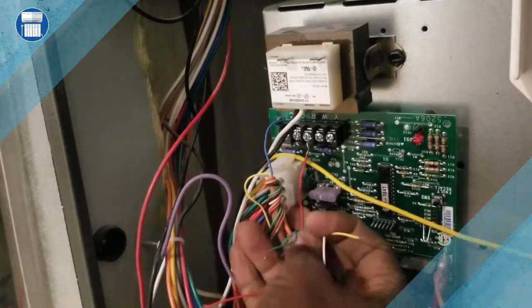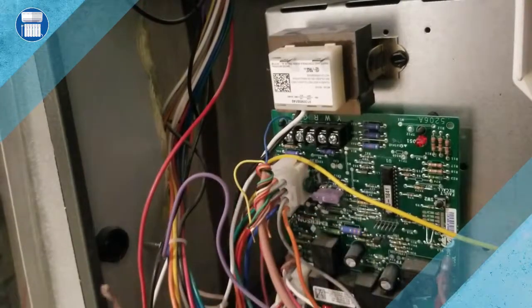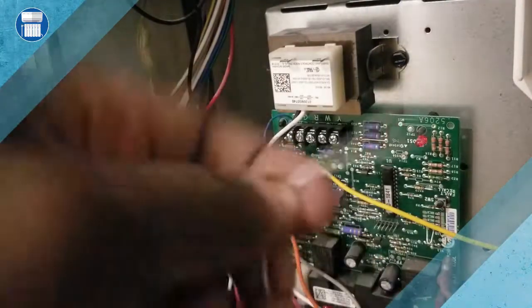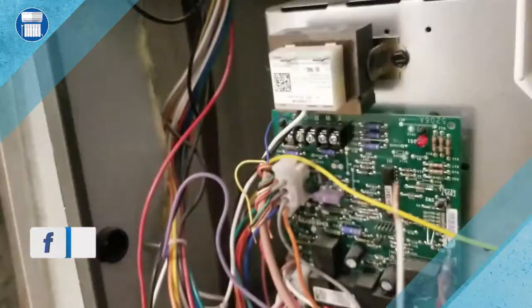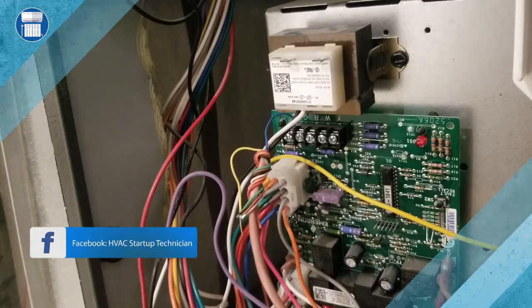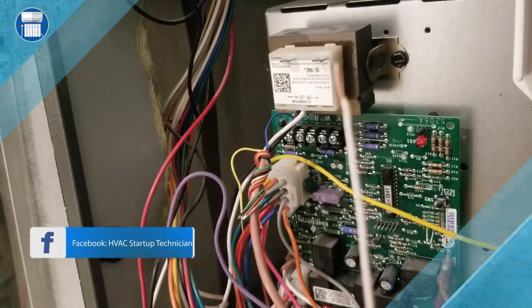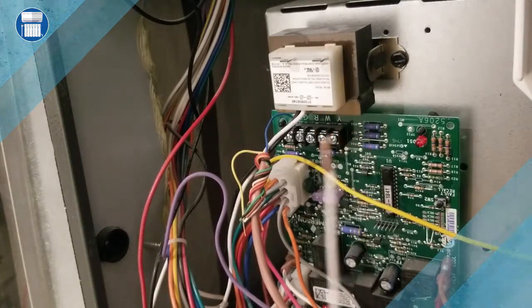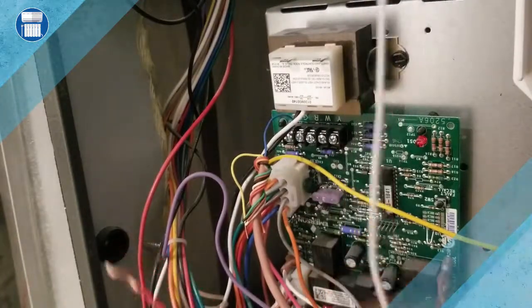We're going to put that to your R terminal right here. Then we're going to white, which is for heat. If you have to jump your unit and your heat is not working, that's when you normally put a jumper between red and white. So this white wire here is going to go to your W terminal, which says white.